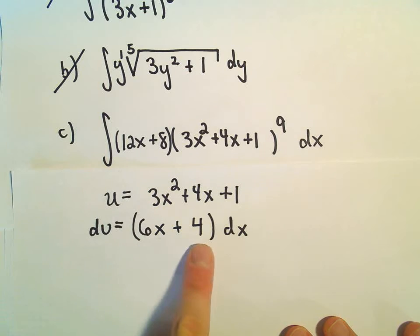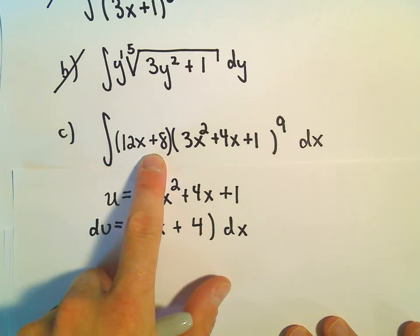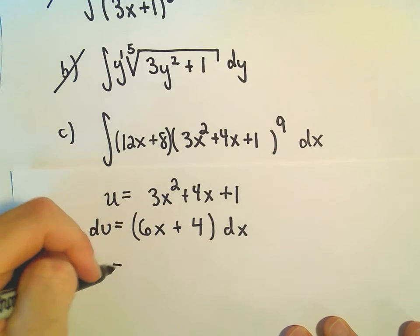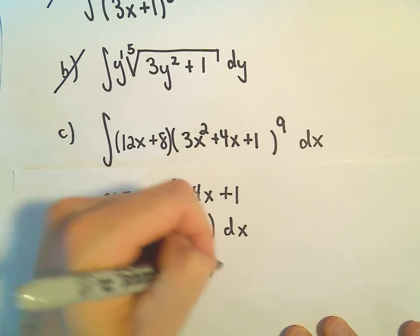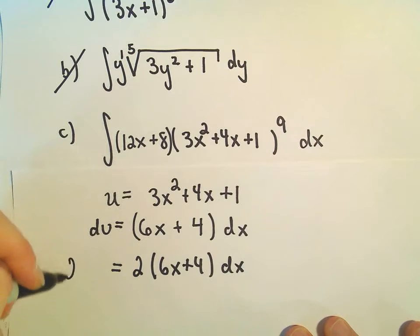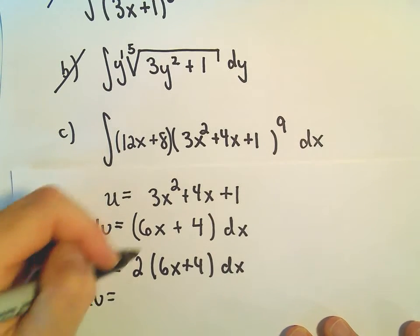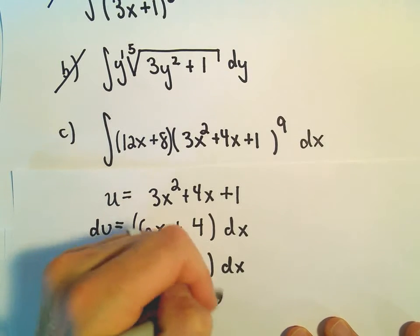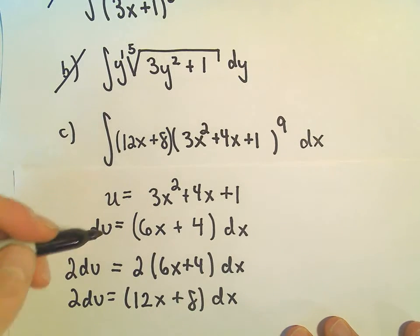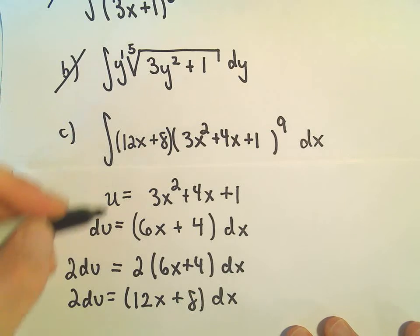I don't want just 6x plus 4, I want 12x plus 8. But notice if you multiply the right side by 2, we would have to multiply the left side by 2 as well. Then if we distribute, we do get 12x plus 8 dx, so everything is set up nicely to work out.